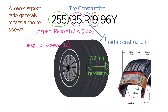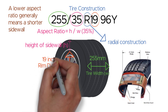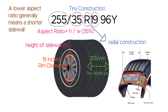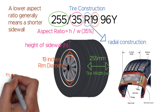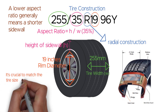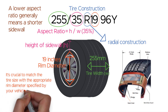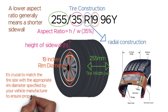The number 19 is the rim diameter. It indicates the diameter of the wheel or rim that the tire is designed to fit, in inches. In this case, the tire is intended for a 19-inch diameter wheel. It's crucial to match the tire size with the appropriate rim diameter specified by your vehicle manufacturer to ensure proper fitment and performance.